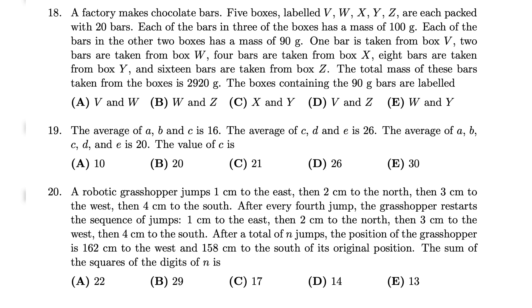Question 20: This is a guessing game. Every two turns, the grasshopper jumps 2 cm to the west and 2 cm to the south. After 323 jumps, it moves to the correct position. The sum of the squares of the digits of 323 is 9 plus 4 plus 9 equals 22.